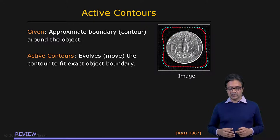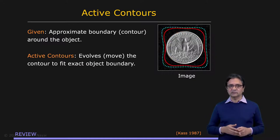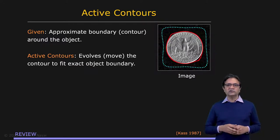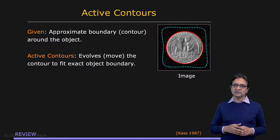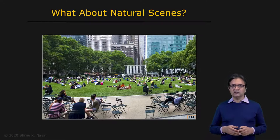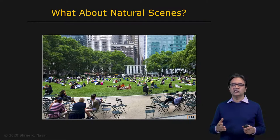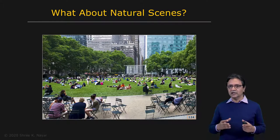But active contours are a simple setting in the sense that the user guides the process — they have to initialize the active contour. Very useful in many different domains, but it doesn't solve the general segmentation problem. In order to appreciate how hard segmentation is in general, one really needs to look at natural images. The question here is: how does one segment this image into meaningful regions, and what is a meaningful segment in this case?